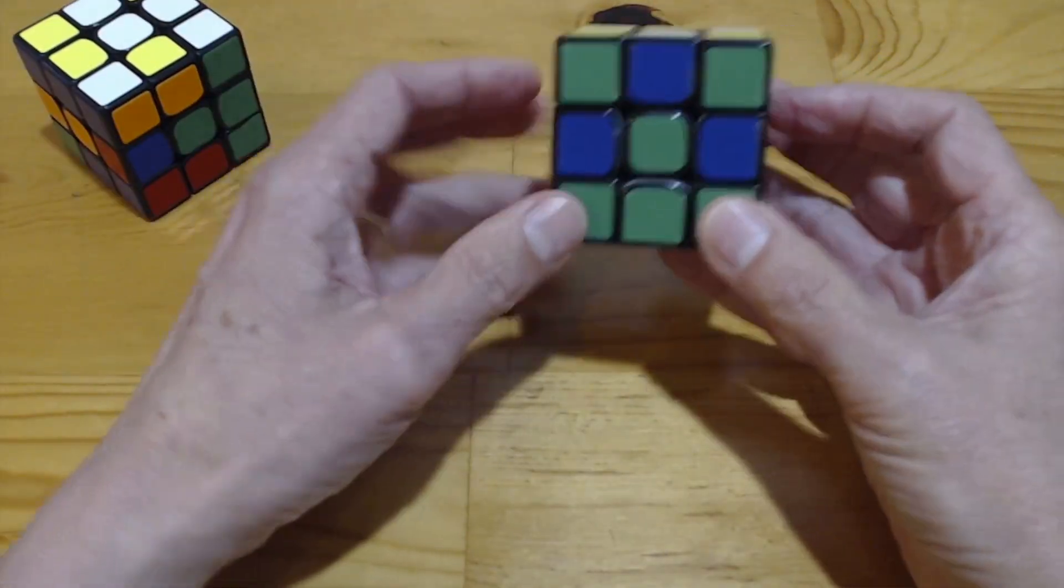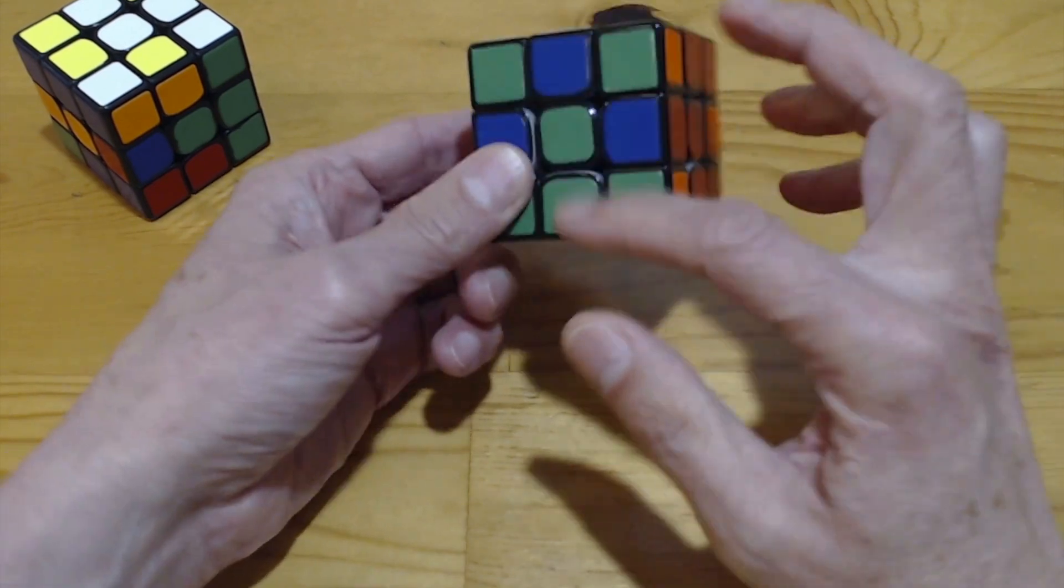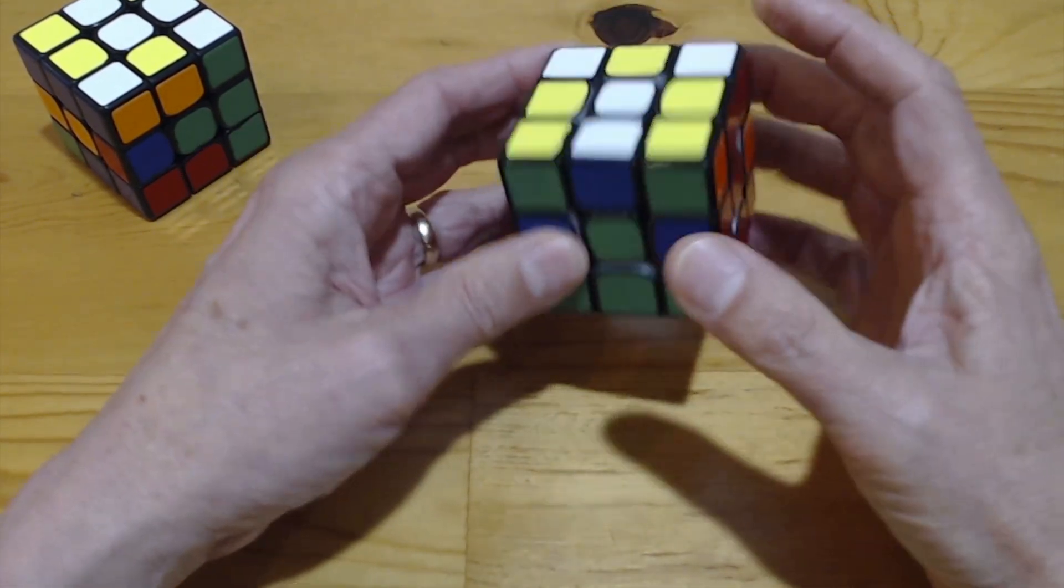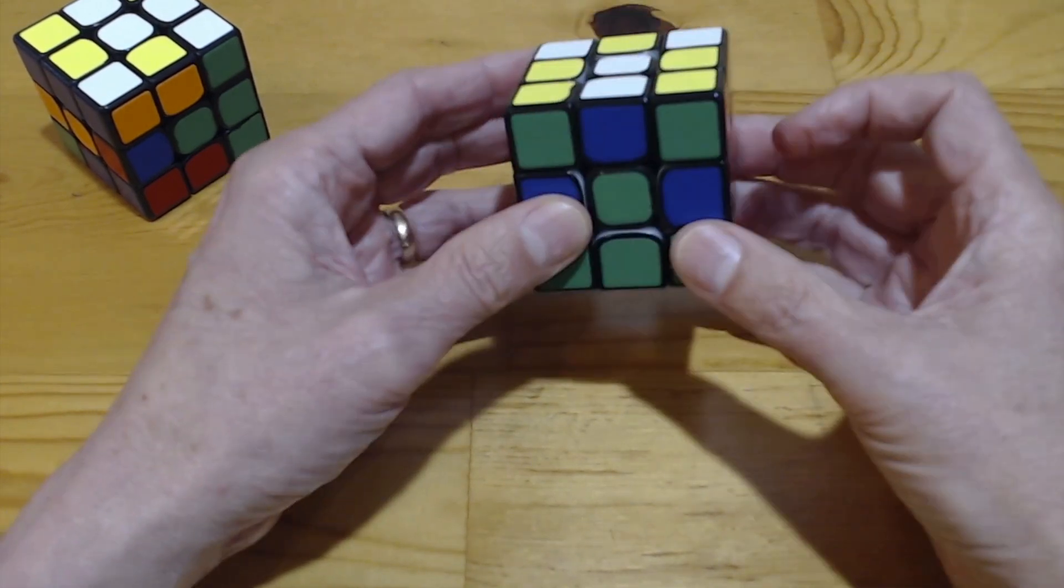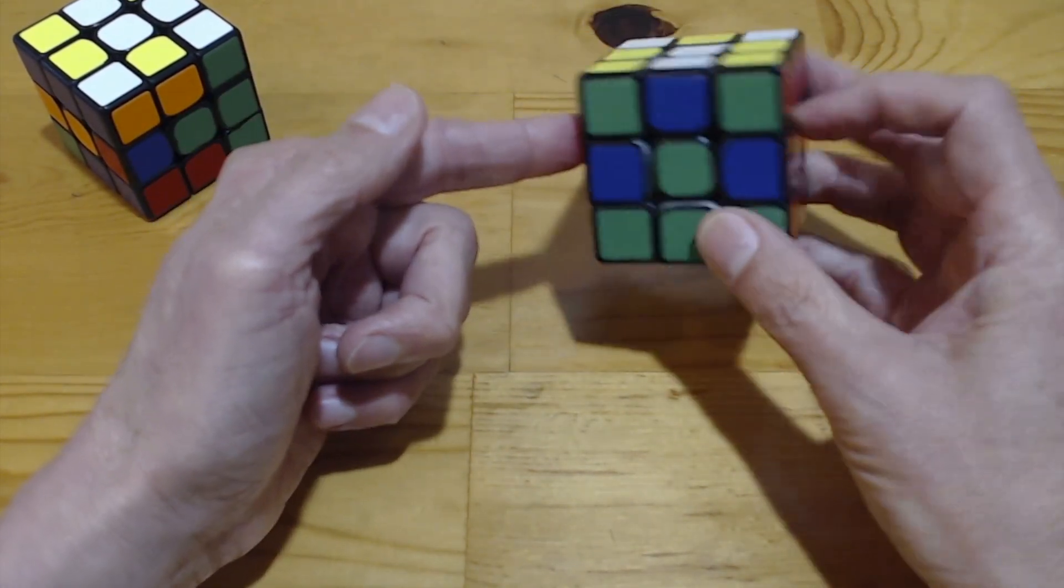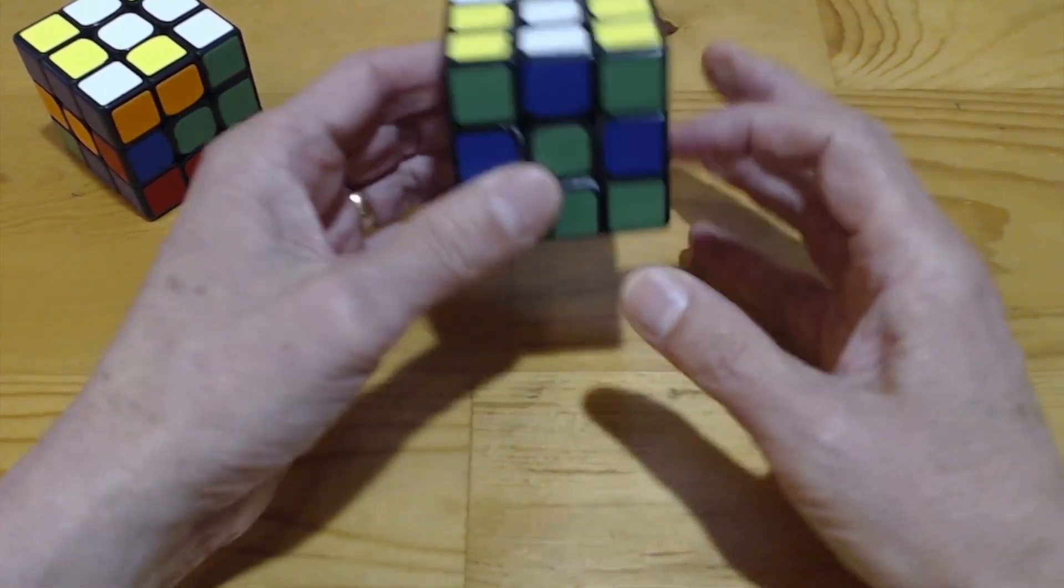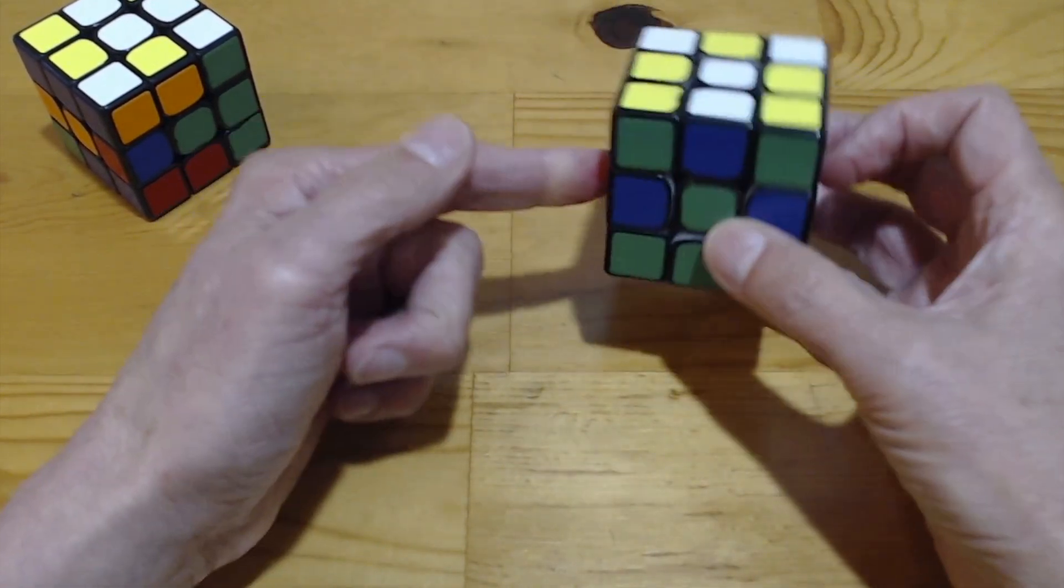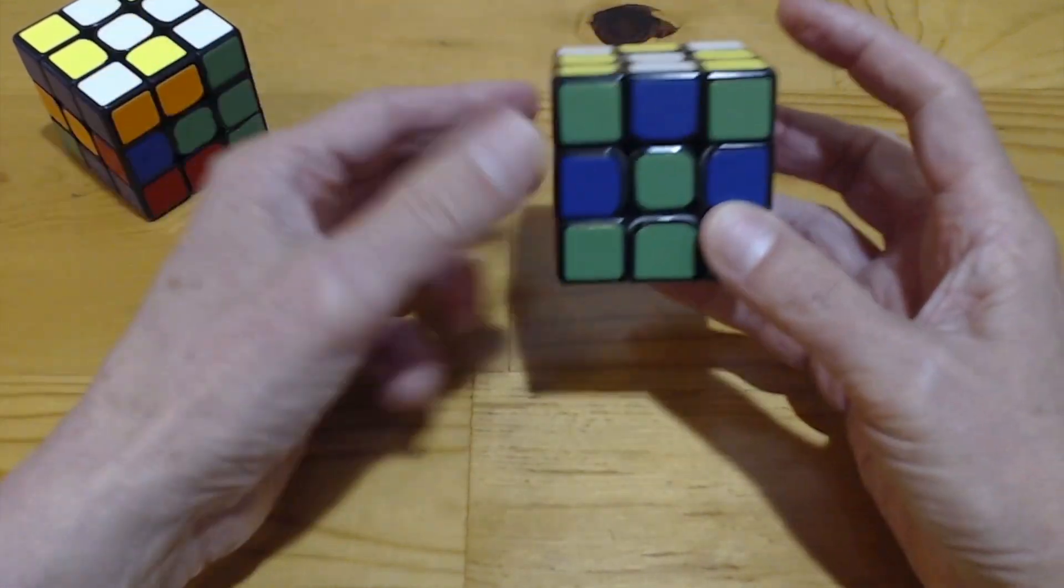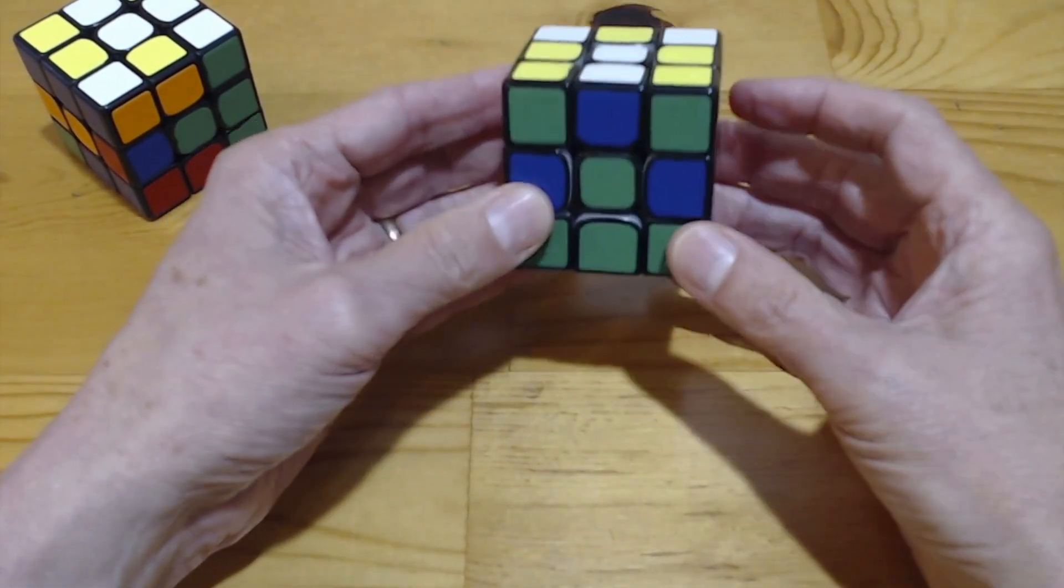So what we're going to do instead is start at HTR and solve everything but one insertion's worth of edges, and that means either 2E, 3E, or 2E, 2E. And the strategy is pretty simple. You just get the cube into floppy reduction but ignore either the M slice or the S slice. Then you finish the solution, leaving just those few edges unsolved. Usually they'll be in the same slice and that's a double slice reduction.